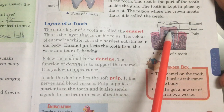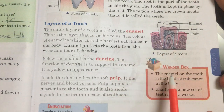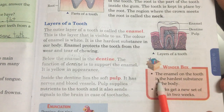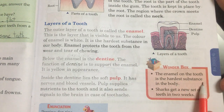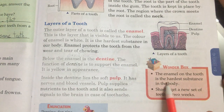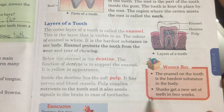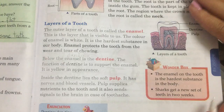The layers of a tooth are: enamel, dentine and the pulp. Wonder box: The enamel of the tooth is the hardest substance in the body. Sharks get a new set of teeth in two weeks.